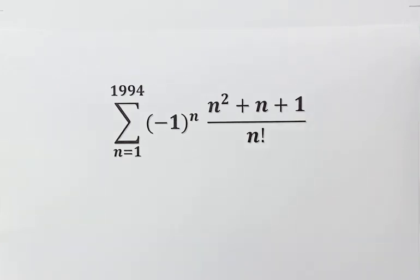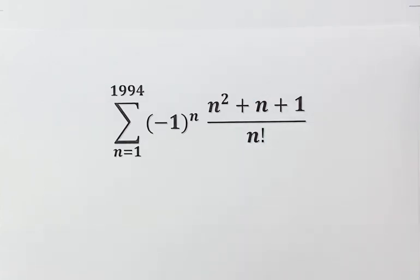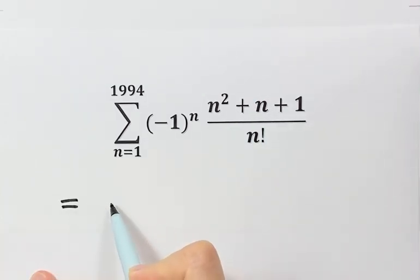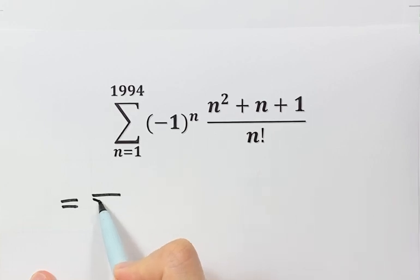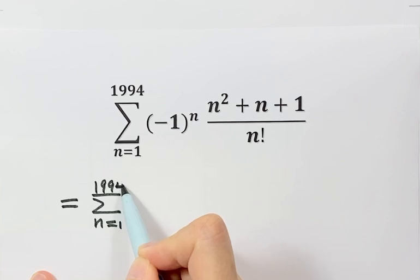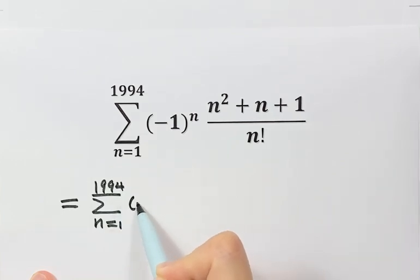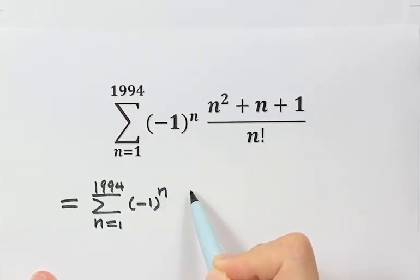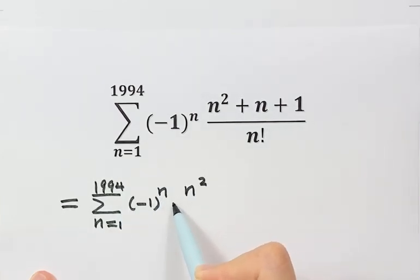First, we're going to separate the sum into two parts. We're going to separate from here. So now let's see the first part. The first part has n from 1 to 1994, with n squared on top and n factorial on the bottom.